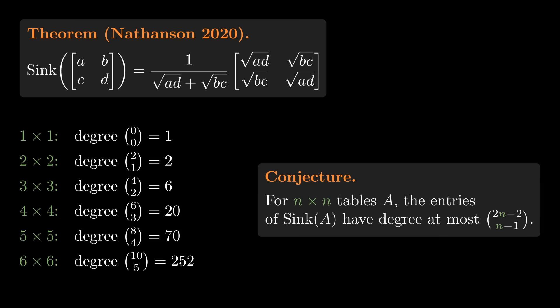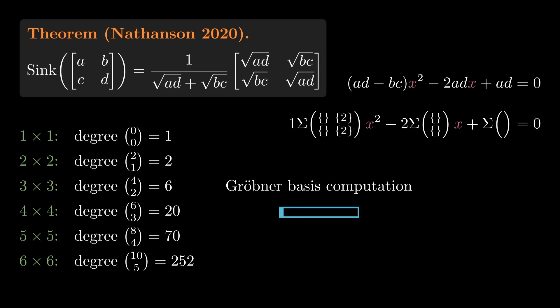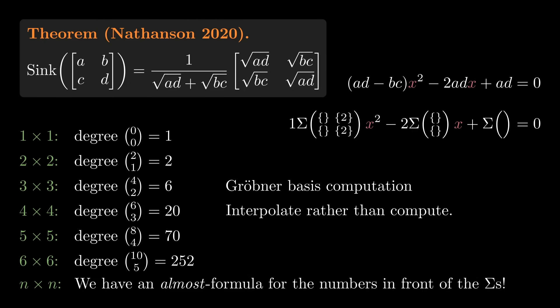For 2 by 2 tables, earlier we wrote out the equation we get from Nathanson's formula. And its coefficients can indeed be written using sigmas. That's a good sign. So what are the coefficients in general? What are these numbers in front of the sigmas? Well, we got the equation for 3 by 3 Sinkhorn limits from a Grobner basis computation. And we tried to do the same for 4 by 4. We couldn't get the computation to finish though. But we had a plan B, which was to interpolate the equation from numeric examples rather than compute it directly. For that part of the story, I'll refer you to our paper and simply say that yes, entries of 4 by 4 Sinkhorn limits satisfy polynomial equations whose coefficients can be written using the sigmas. The same seems to be true for 5 by 5 Sinkhorn limits. In fact, for general n by n Sinkhorn limits, we have an almost formula for the numbers in front of the sigmas. It's not quite a formula because there are some signs that we haven't been able to identify, but we think we understand the main structure behind them.